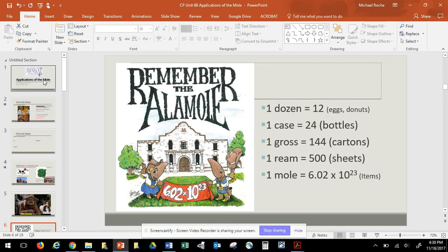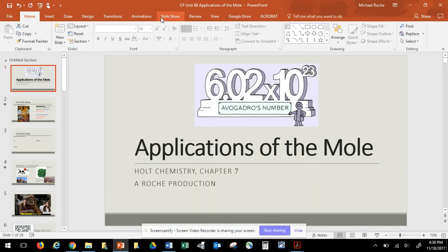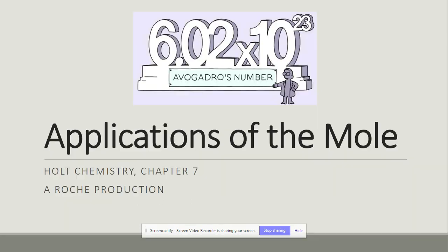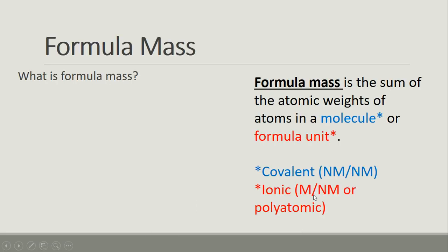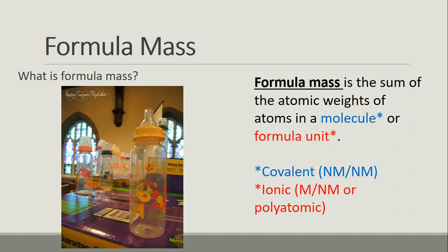All right, kids. So let's try this again. I have reason to believe that the one with my daughter wasn't that helpful. So let's try this. First thing we talked about was formula mass. The formula mass is the sum of the atomic weights of atoms in a molecule or a formula unit. And there is this lovely picture of formula going to mass.